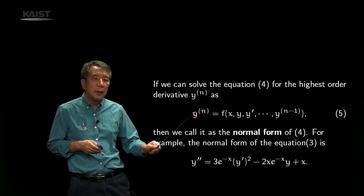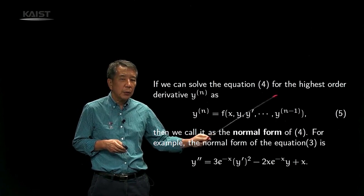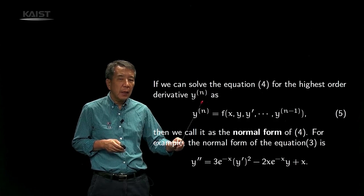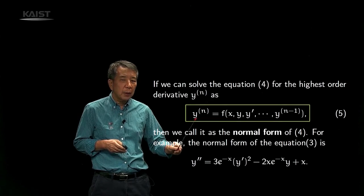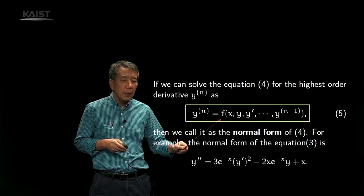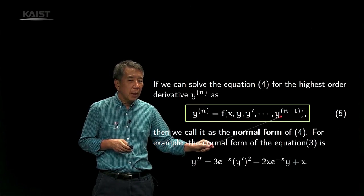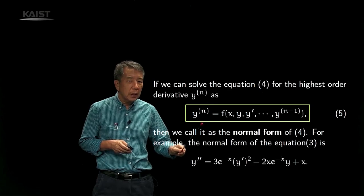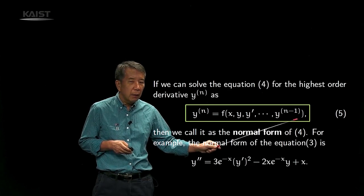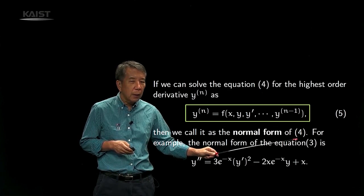If we can solve equation number 4 for its highest order derivative — say, the nth derivative of y — so that the nth derivative of y equals little f of x, y, y prime, through the (n minus 1)th derivative of y, then we call this equation number 5 the normal form of equation number 4.